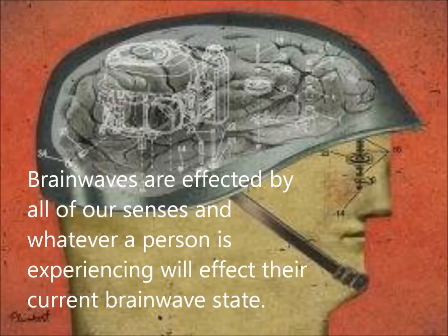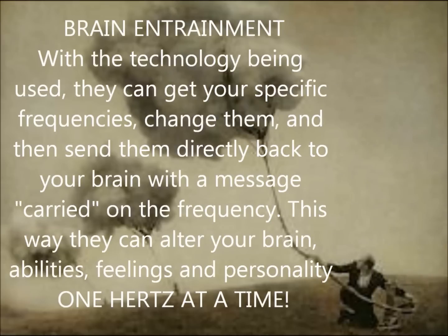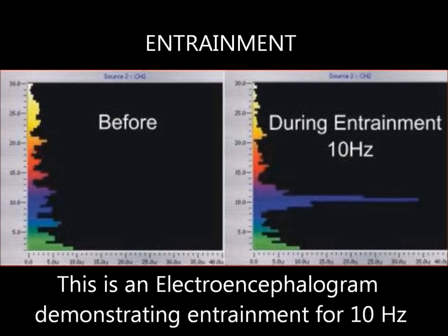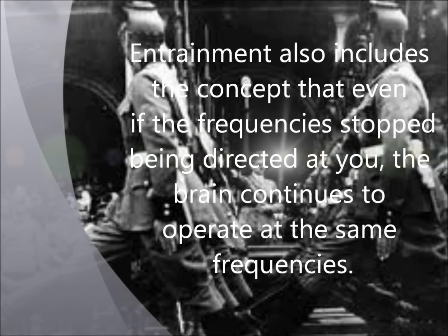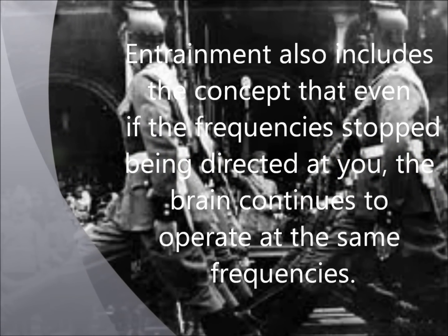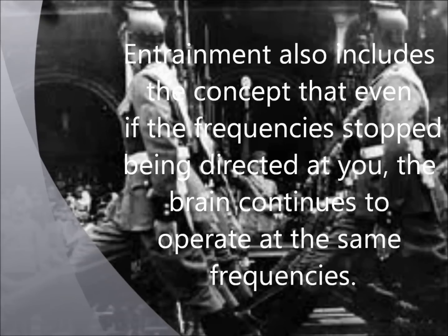Entrainment. Brain waves are affected by all our senses, and whatever a person is experiencing will affect their current brain wave state. With the technology being used, they can get your specific frequencies, change them, and then send them directly back to your brain with a message carried on the frequency. This way they can alter your brain abilities, feelings, and personality, one hertz at a time. Entrainment also includes the concept that even if their frequencies stopped being directed at you, the brain continues to operate at the same frequencies.